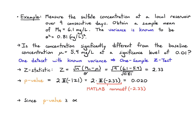Since the p-value here is greater than 0.01, we're going to fail to reject the null hypothesis. Informally, the conclusion we would draw is that the concentration is not elevated. It might be elevated — we don't know the entire process — but by applying this statistical test, we don't find significance at a level of 0.01, so we fail to reject the null.